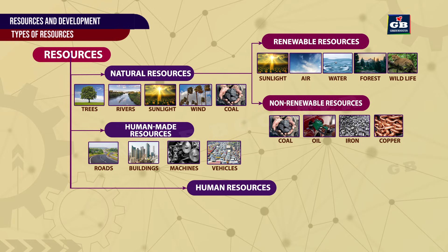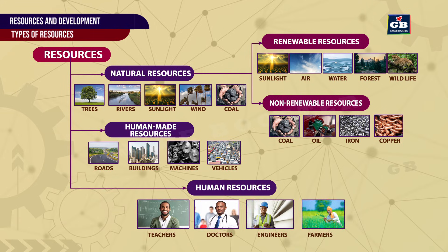Human Resources. Skills, knowledge, and abilities of people are called human resources. For example, teachers, doctors, engineers, and farmers.